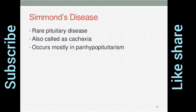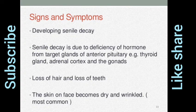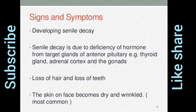Simmond's Disease: a rarer pituitary disease, also called cachexia, occurs mostly in panhypopituitarism. Signs and symptoms include developing senile decline, which is due to deficiency of hormones from the target glands of the pituitary — the thyroid gland, adrenal cortex, and the gonads. There is loss of hair, loss of teeth, and the skin on the face becomes dry and wrinkled.